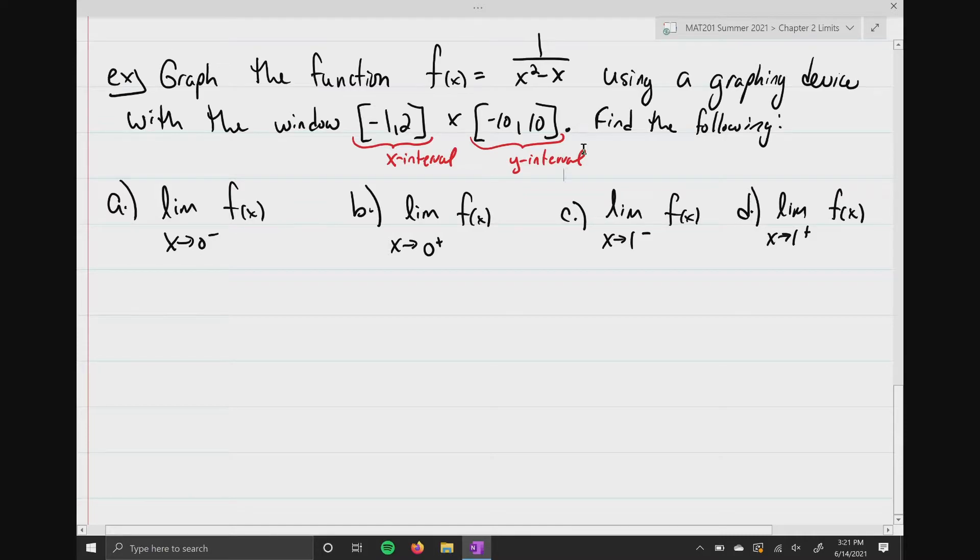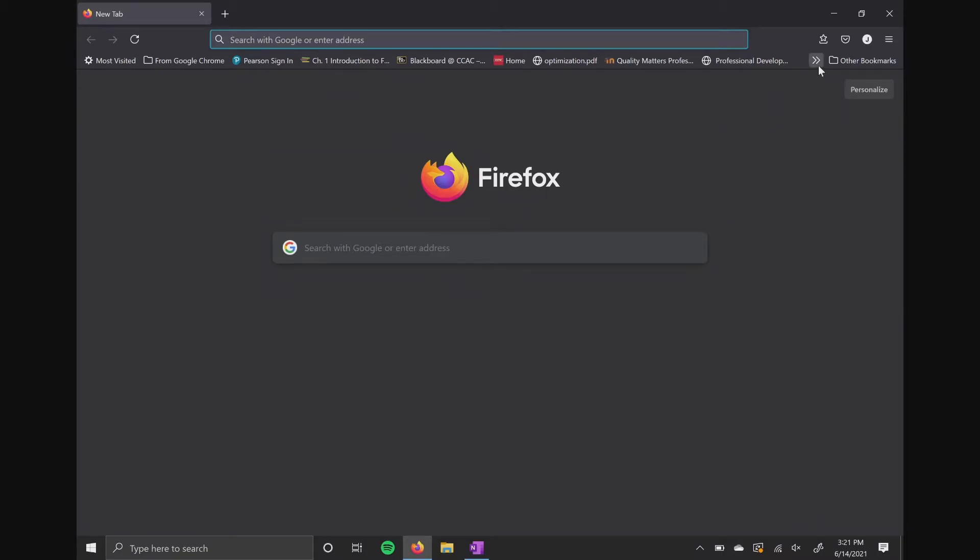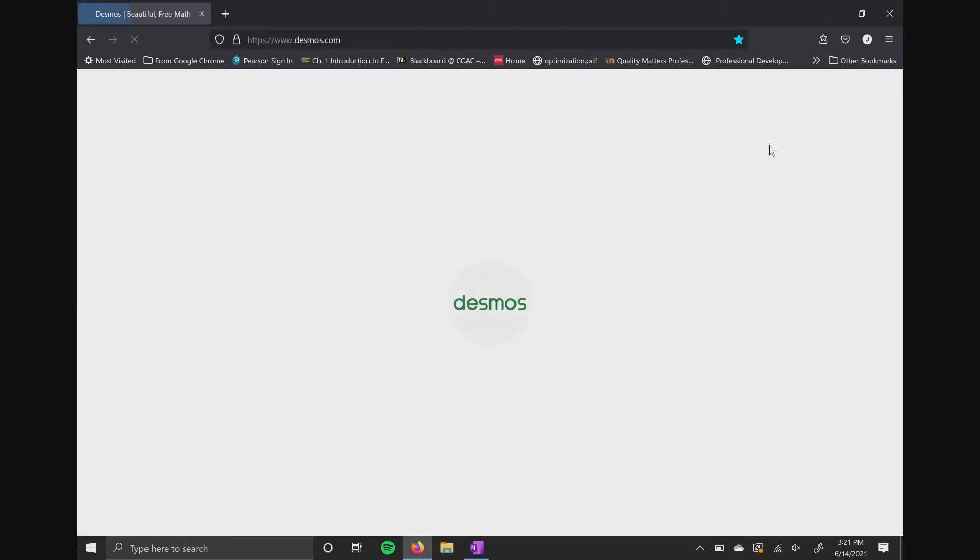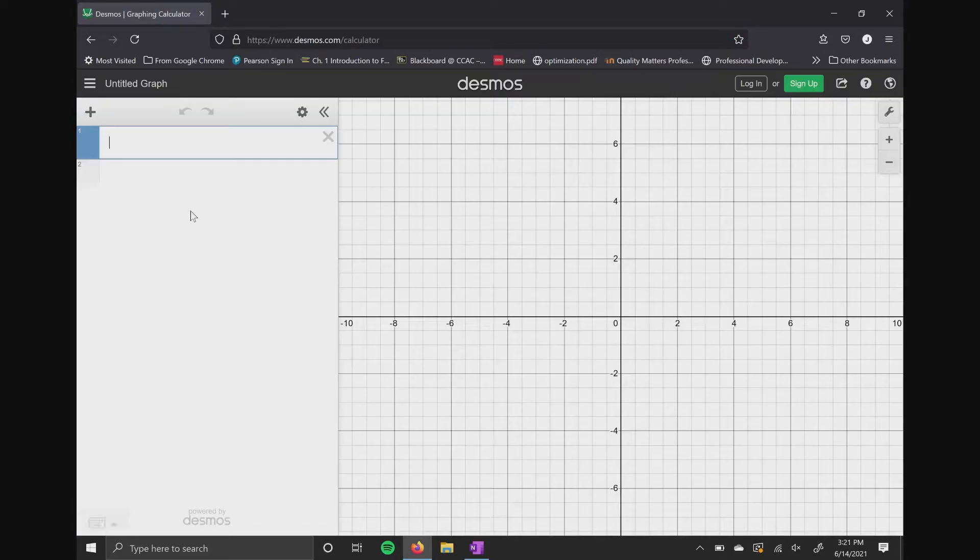So I'm gonna show you how to do this using Desmos. So let me go ahead and get out the Google machine here. There's Desmos right there. So I don't need to sign in or anything for this. We're just gonna go ahead and graph. So we're gonna type in 1 over x squared minus x.